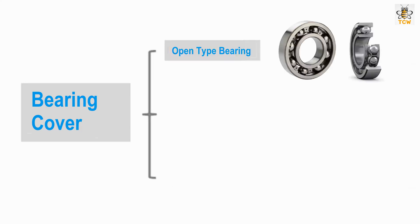In addition to the four main components of the rolling bearing, rolling bearings also have an additional component, namely the bearing cover. Open-type bearings do not have a cover to protect the rolling elements. This type of bearing is used in machines that already have a lubricant with a lubricant filter or in tightly closed conditions, so that the lubricant that lubricates the bearing is clean and the bearing does not need a cover.